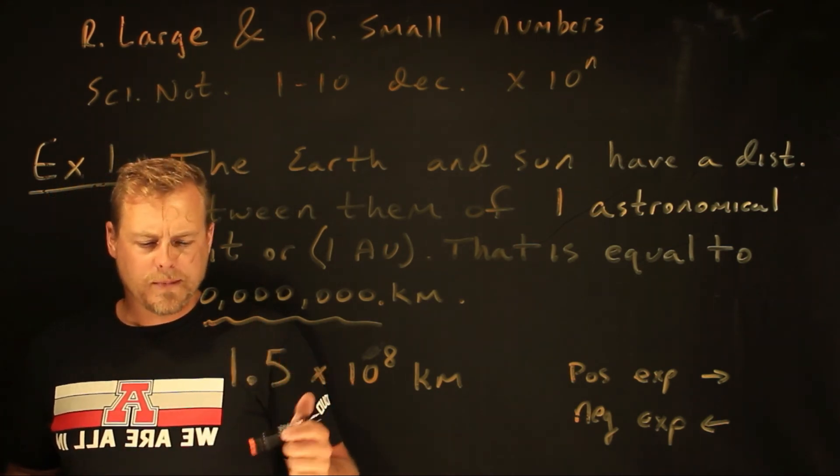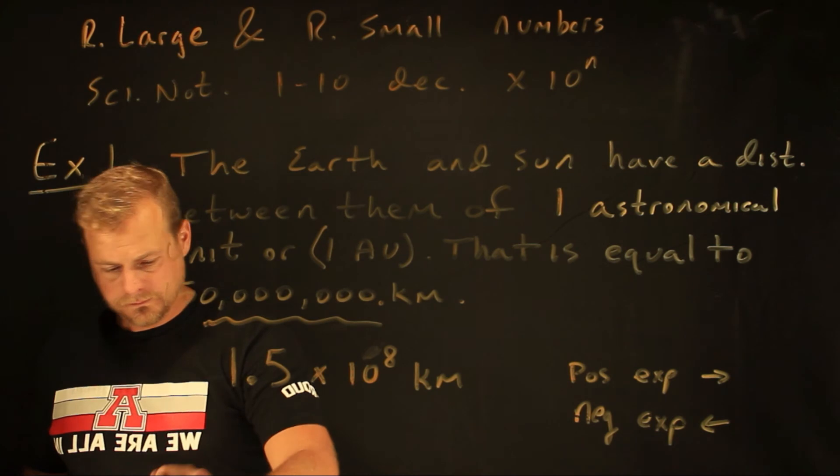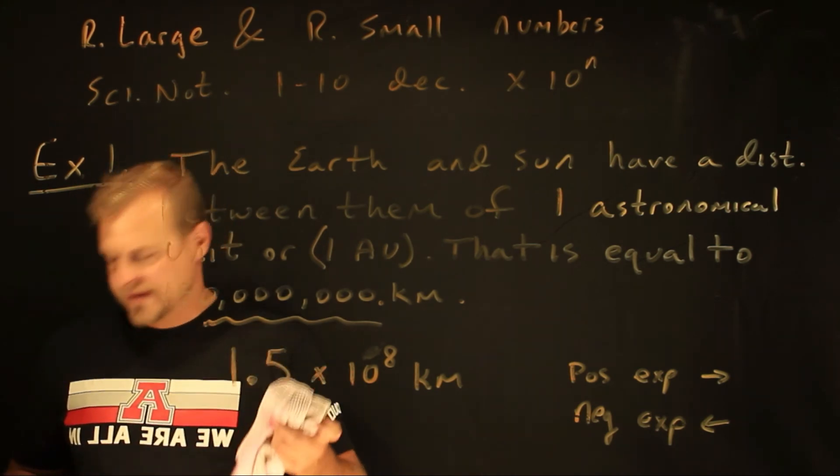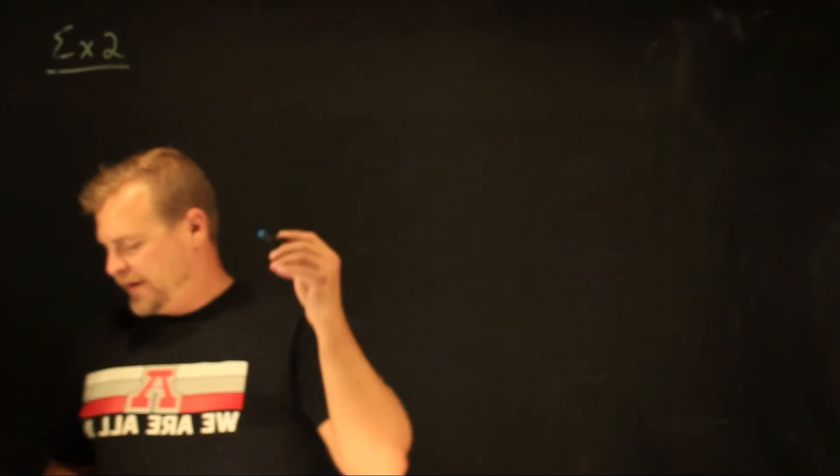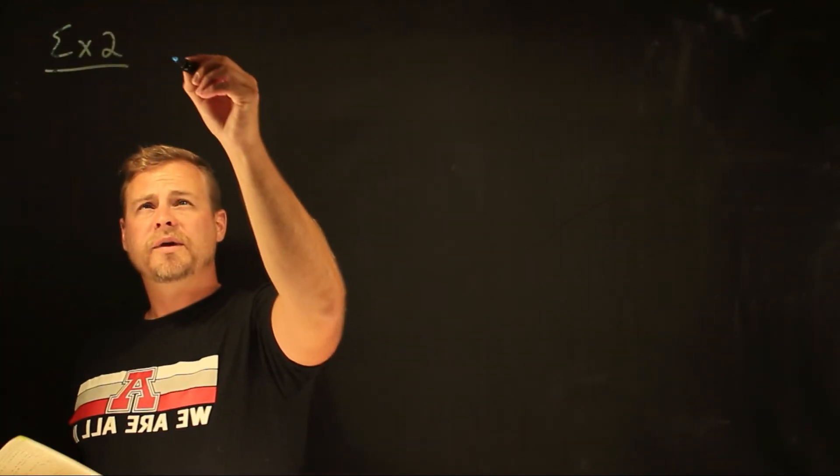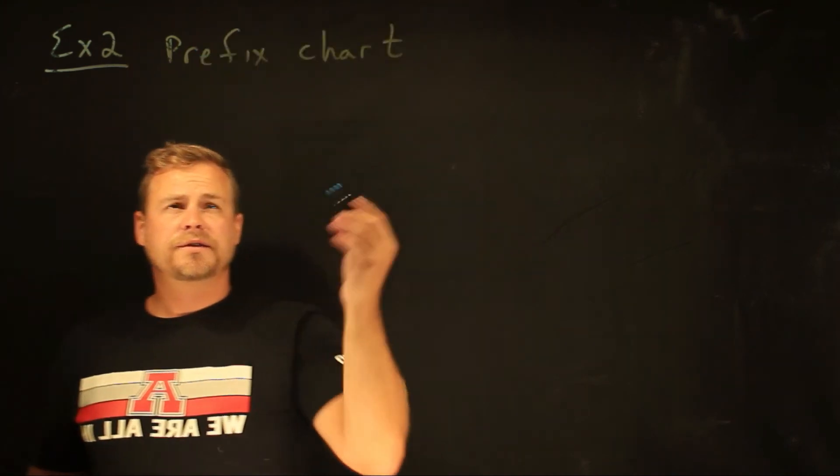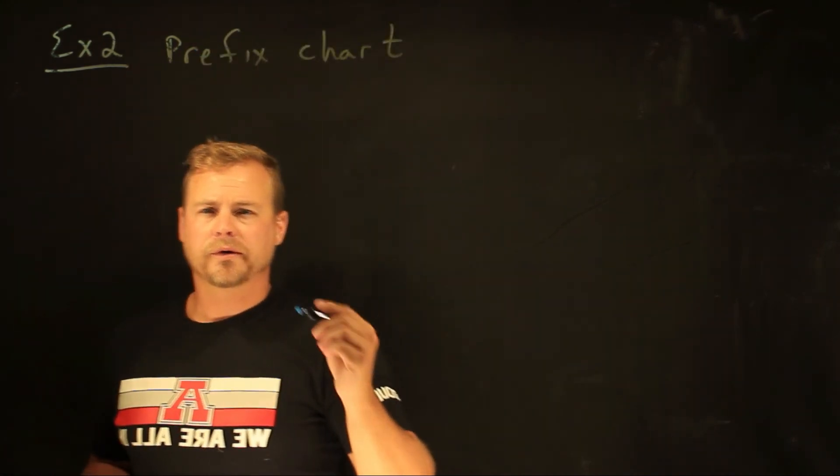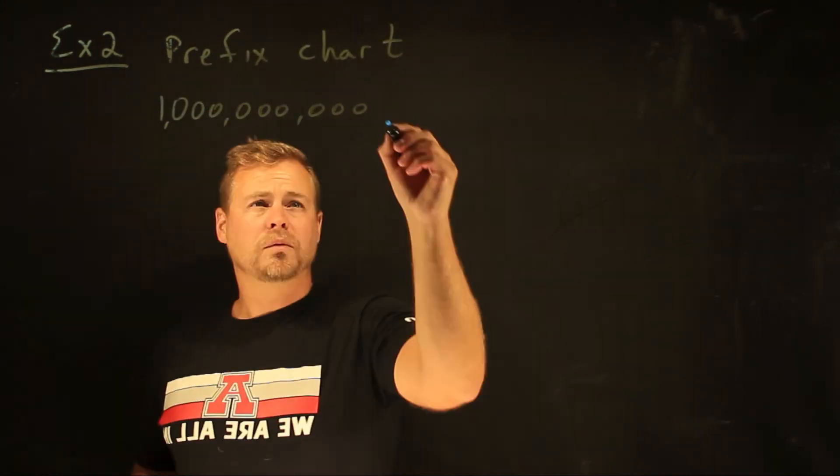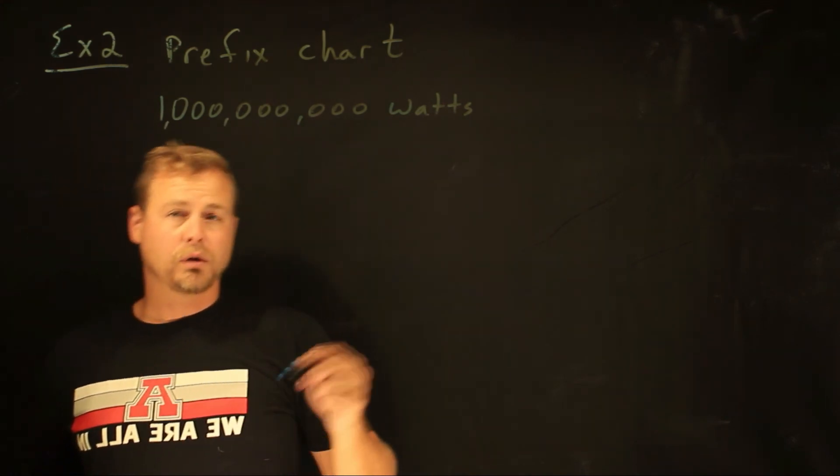And there are some of them that are really common. So let's do another example about some common ones. Some of the really, really common ones, we have a prefix chart. Let's take a power generator, a power station.